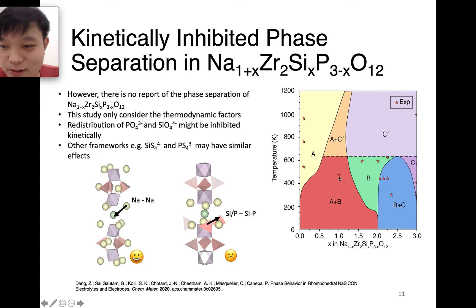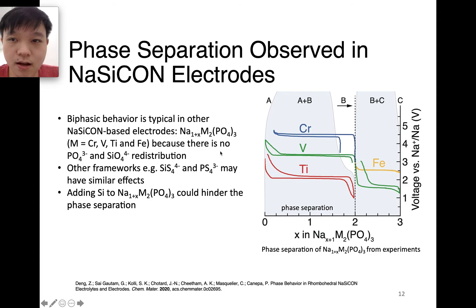Other frameworks like silicon sulfide and phosphorus sulfide framework might have similar effects. When we expand this type of knowledge to other NaSiCON structures, especially NaSiCON electrodes, most of them don't have the silicon here. They replace the zirconium with a transition metal, and the transition metal can change oxidation states. So here, there's no need to redistribute the silicon and the phosphorus. What they only need to do is change the oxidation states for the metal side.